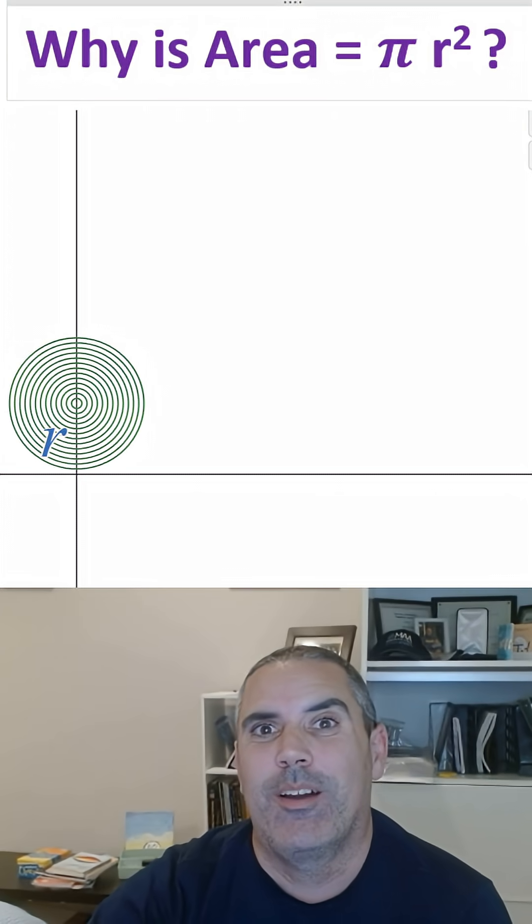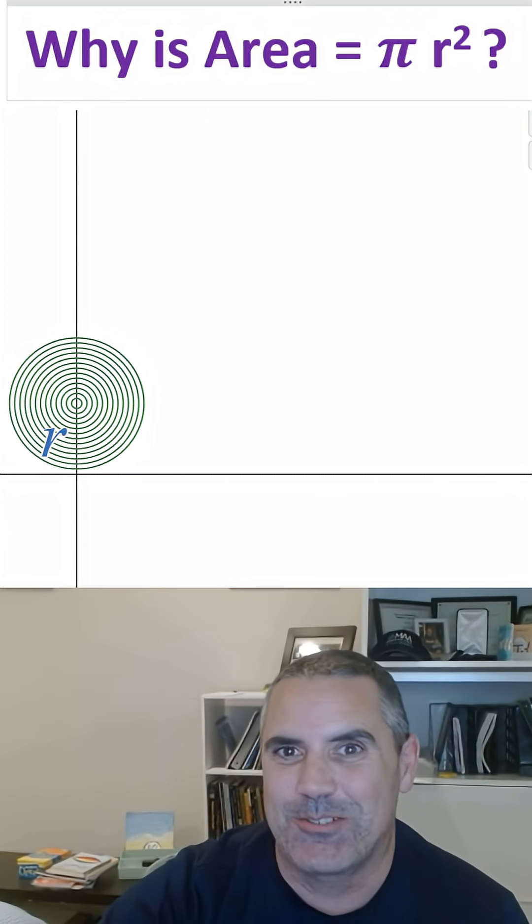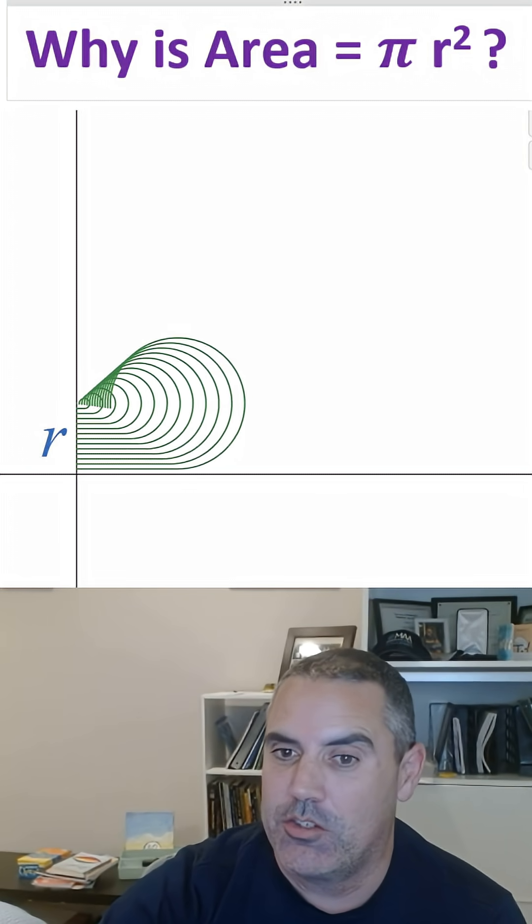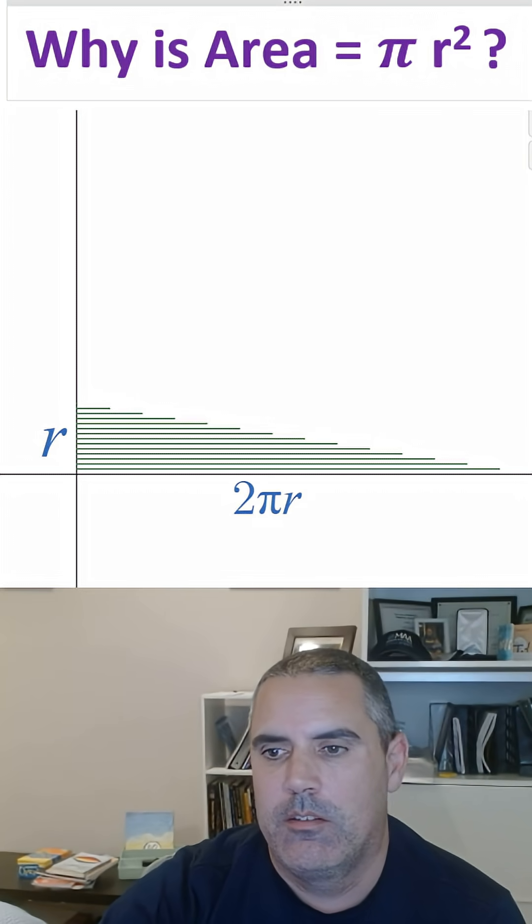Now if you want to know why that's 2 pi r, I have a separate video of that where I measure many circles around my house. And watch that video and I show you that that's where pi comes from. So all the way around that, that is 2 pi r.